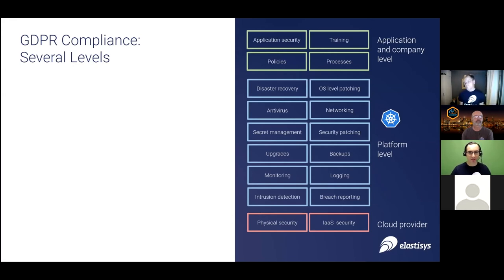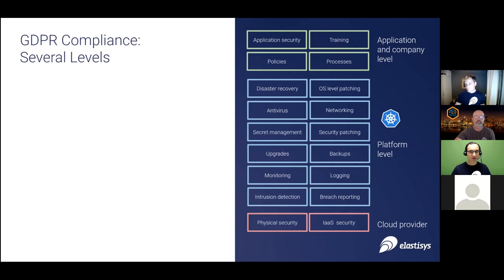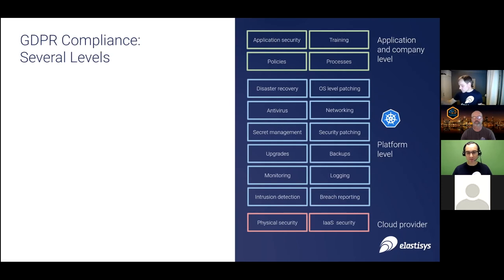I'm Christian, senior cloud architect at Elastix, at the intersection of InfoSec, compliance, and cloud-native technologies. Whenever you're talking about GDPR or compliance, it's happening at several levels. At the lowest level — hardware — controls include physical security: knowing who gets into your data center and who can touch your computers or steal hard drives with personally identifiable information. There's also infrastructure-as-a-service security, making sure nobody can just SSH into the host and steal data from running VMs. Europe is pretty mature on this, and all the vendors shown are very serious about security at this level, most having ISO 27001 certification.